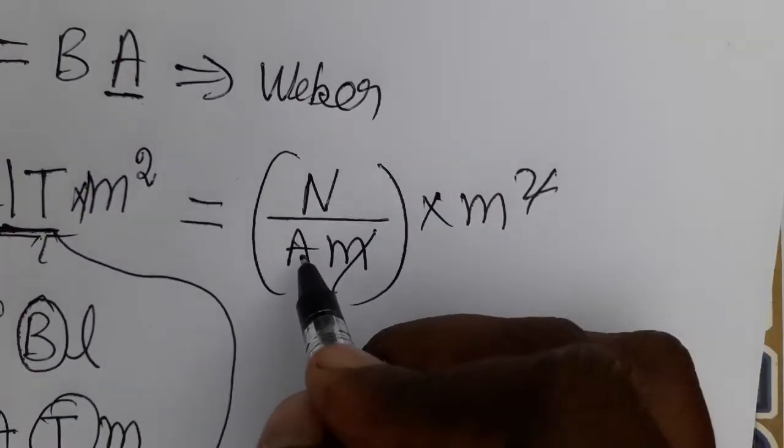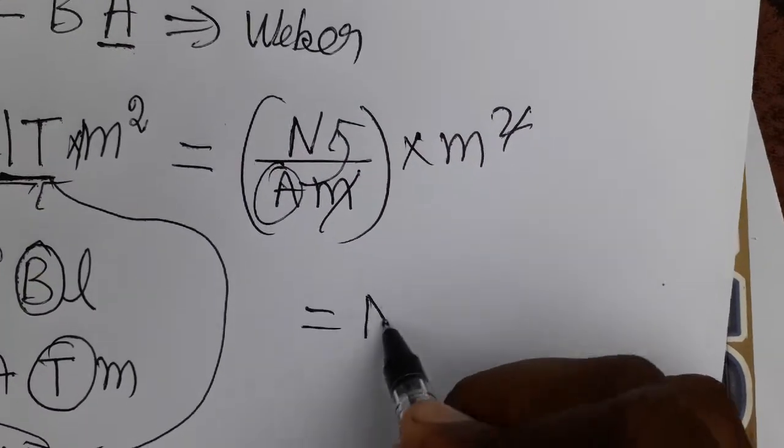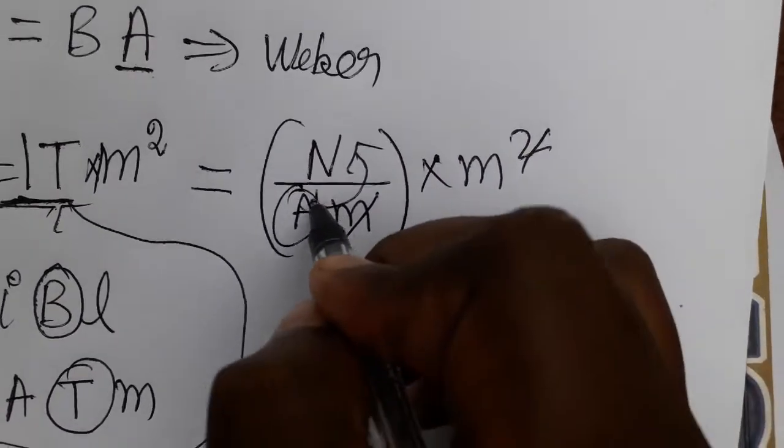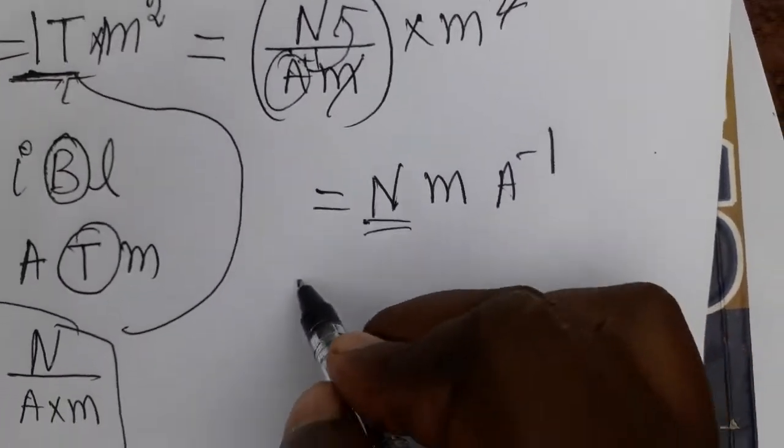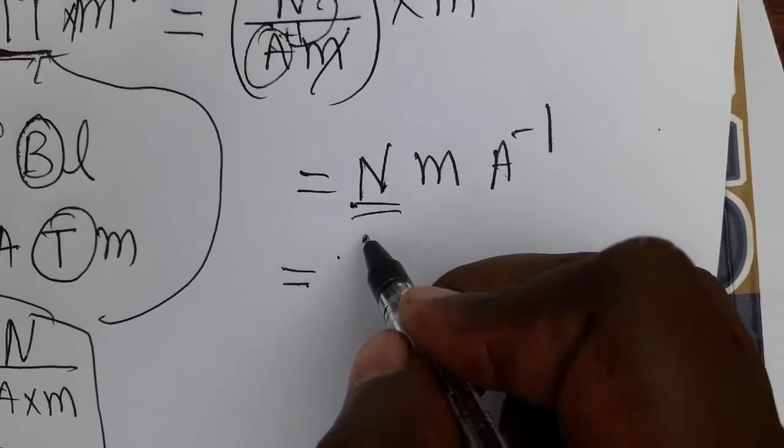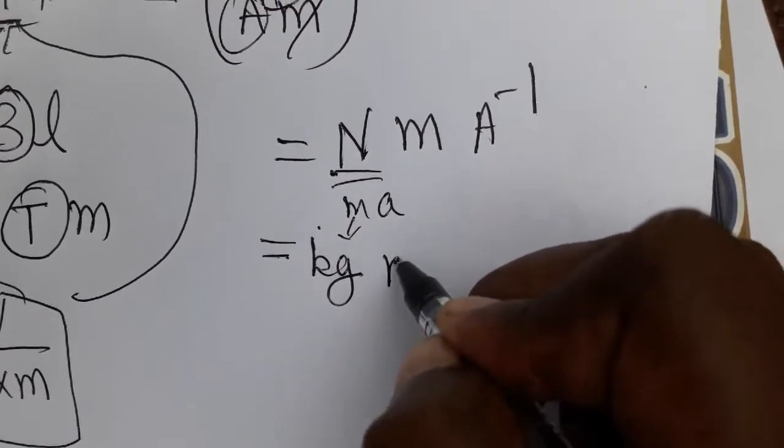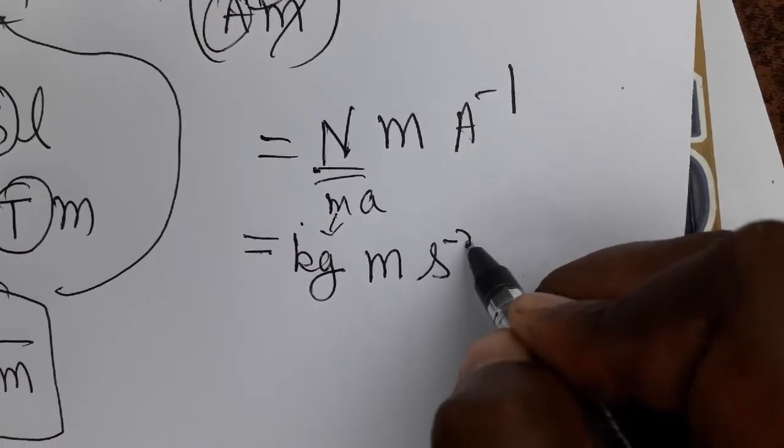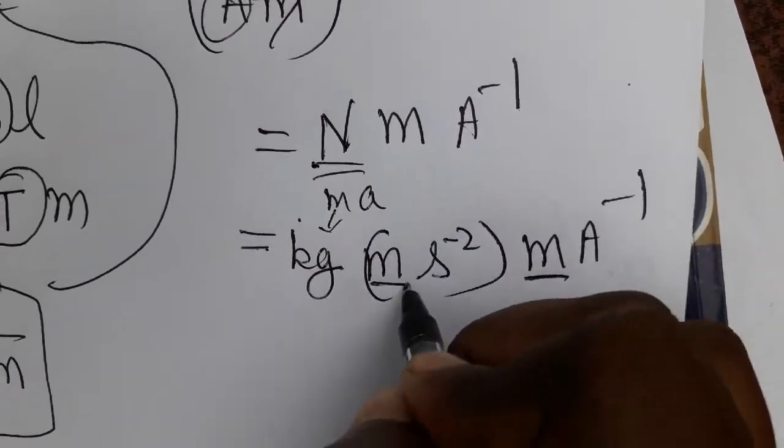Meter and meter cancel, leaving newton meter by ampere, or newton meter ampere to the minus one. Newton is force, which is mass into acceleration. Mass SI unit is kg, acceleration is meter per second squared. This gives us kg meter squared second to the minus two ampere inverse.